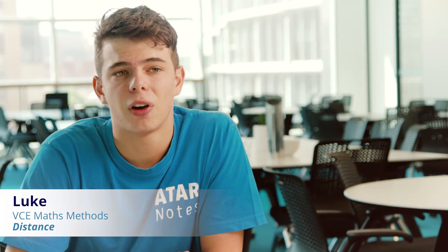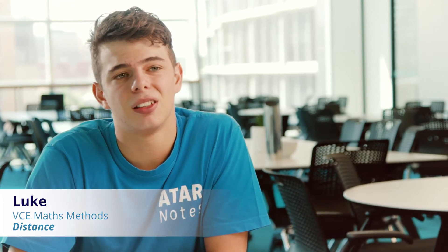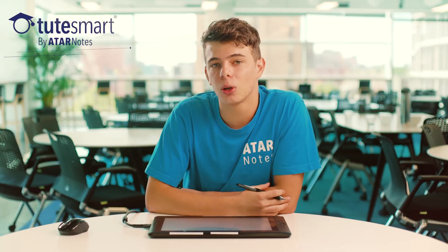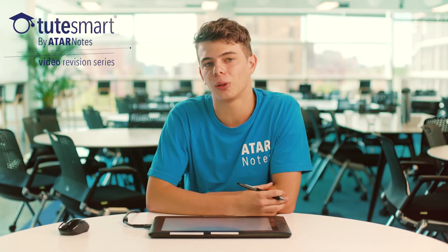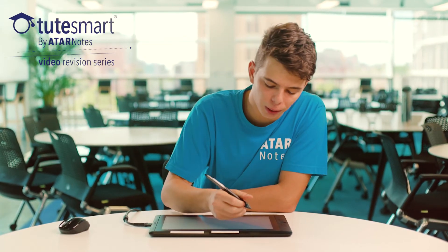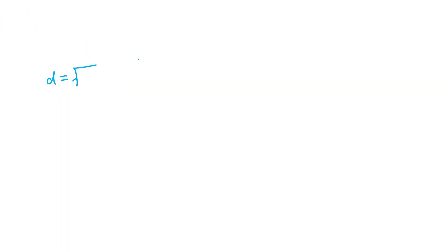Hi guys, so today we're going to be looking at finding the distance between two points. In Methods we should all be aware of the distance formula, which is d equals the square root of (x2 minus x1) squared plus (y2 minus y1) squared.